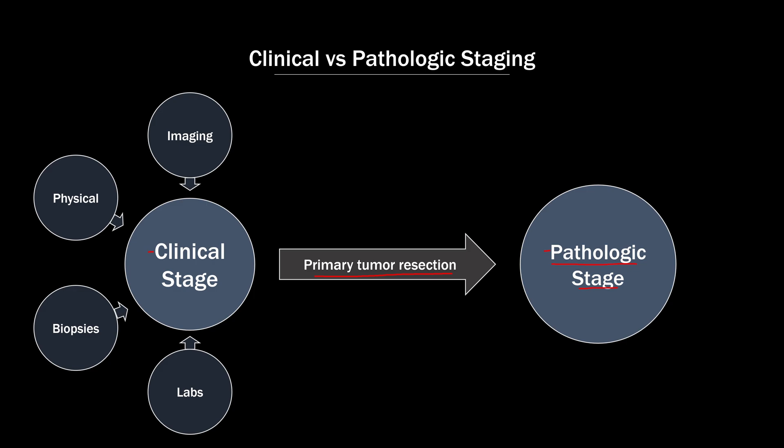For example, an enlarged lymph node on CT is positive for metastatic disease only about 60% of the time, and lymph nodes that are hot on PET are pathologically positive only about 75% to 85% of the time. These are denoted in practice and in the literature by using the prefix C for clinical stage or P for pathologic stage, right before the stage classification or sometimes right before the T, N, or M category.